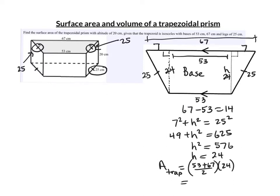53 plus 67 is 120. 120 divided by 2 is 60. And 60 times 24 is 1440. And if we labeled it, it would have been centimeters squared. So this is just the area of that one trapezoid.